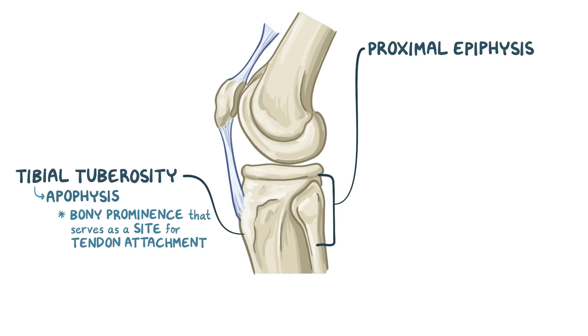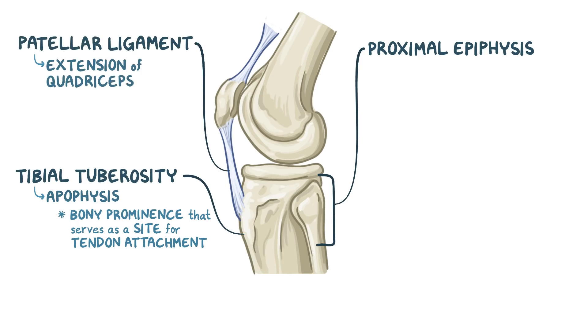The tibial tuberosity specifically serves as an attachment site for the patellar ligament, which is an extension of the quadriceps muscle tendon. When the patellar ligament contracts, it extends the knee.